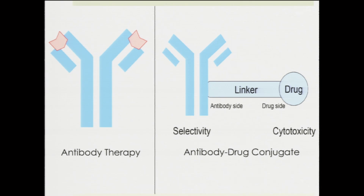Another interesting idea still being developed but with immense promise is the antibody-drug conjugate. You link an antibody to a chemotherapy drug, and once the antibody binds to its target, it releases the drug which kills the cell. So the antibody acts like a guiding missile of sorts.